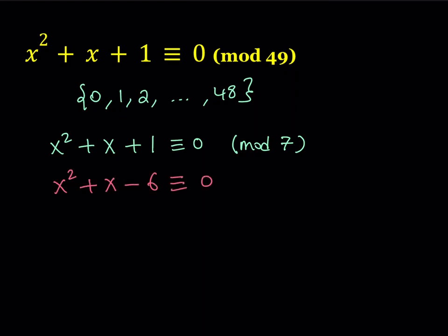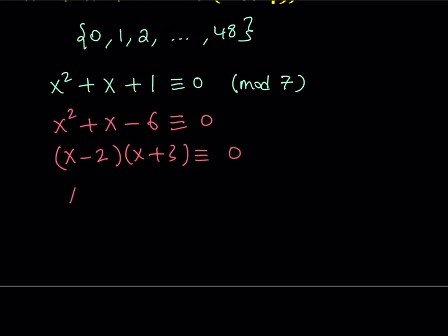And now, this is easy to solve because this is factorable. x² + x - 6 ≡ 0. And so I can just go ahead and factor this quadratic into (x - 2)(x + 3) ≡ 0. And from here, we get the solutions.